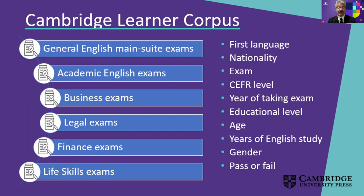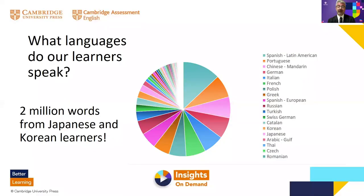Each exam script contains information about the specific learner who provided it — for example, the first language, the nationality, or even the age of the student. We also have an annotation scheme: the exam scripts in the corpus have been error coded. A team of specialists worked through each text and annotated each error with computer-readable tags. This means the corpus can be easily searched to find out where particular groups of students typically struggle. We have two million words of data specifically from Japanese and Korean speakers across all language levels.